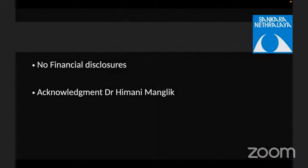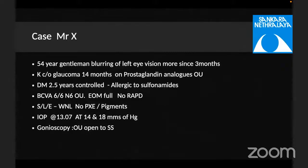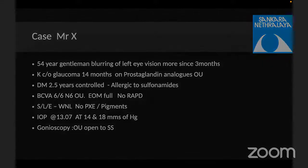I'll be talking about medical management. Let's start with this patient: a 54-year-old gentleman who presented with blurring of vision in his left eye more since the last three months. He's a known patient of glaucoma since 14 months and was on prostaglandin analogs, a known diabetic who was allergic to sulfonamides. His best corrected visual acuity was 6/6 N6. Extraocular movements were full, there was no RAPD, slit lamp showed no pseudo-exfoliation or pigments, and his intraocular pressures were 14 and 18 mmHg. Gonioscopy showed angle structures open till scleral spur.